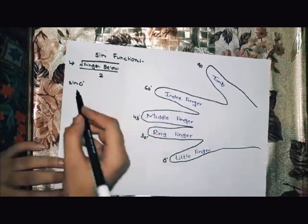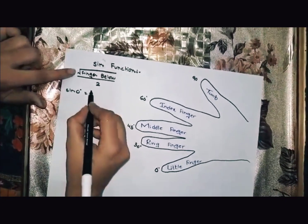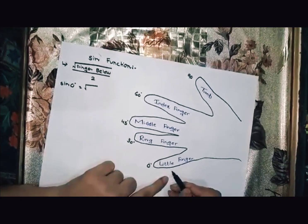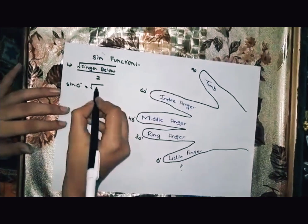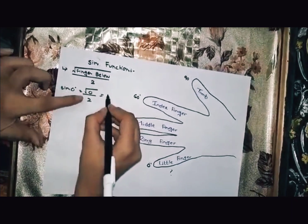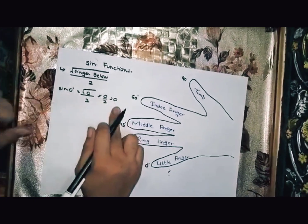First, we find sine zero. We have the formula: under root, finger below. Sine zero, we start with little finger. We have no finger below. Under root zero divided by 2 equals zero. It means sine zero equals 0.